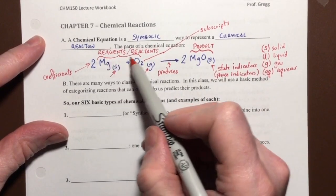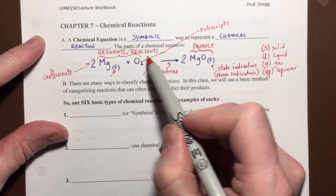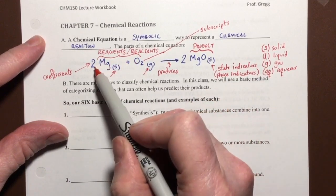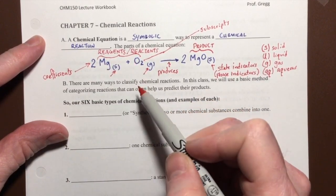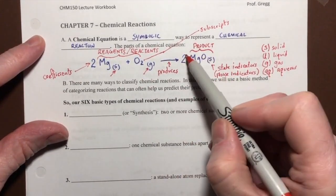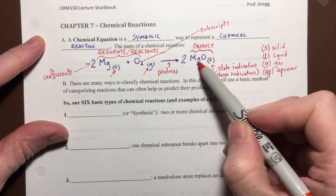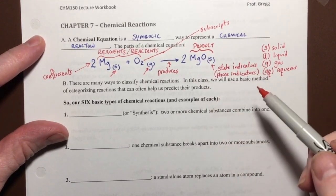So we have reagents and reactants with their state indicators, reacting in a two to one ratio to produce two formula units of this product with that state indicator.